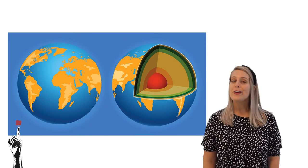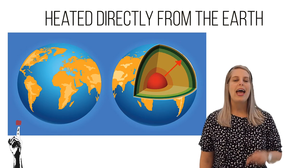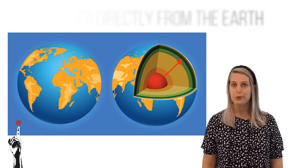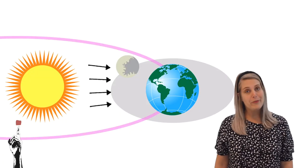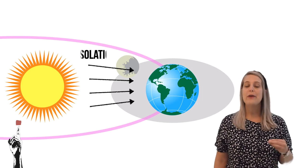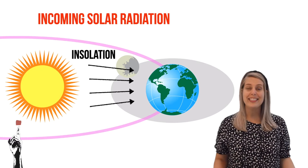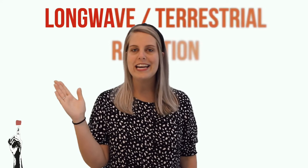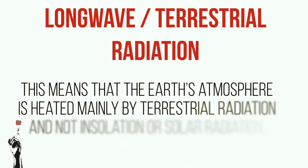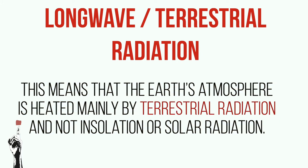The earth's atmosphere is heated directly by the earth and not the sun's rays, although the sun is our main source of energy. The air close to the ground is warmer than the air higher up, so the higher up you go the cooler the air temperature gets. Energy comes from the sun and travels in short waves called solar radiation — we call this insolation, which stands for incoming solar radiation. Only 45 percent of this heat actually reaches earth. The earth then radiates this heat back into the atmosphere as long wave radiation or terrestrial radiation. The earth is therefore heated predominantly by terrestrial radiation rather than incoming solar radiation.